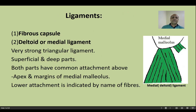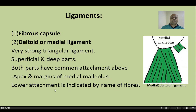The ligaments of the ankle joint include a fibrous capsule. On the medial side, the important triangular ligament is called the deltoid or medial ligament. It has superficial and deep parts, both arising from the apex and margins of the medial malleolus. The lower attachment is indicated by the names of the fibers: anterior, middle, and posterior fibers. Viewing the right ankle joint from the medial aspect, we can identify these components.